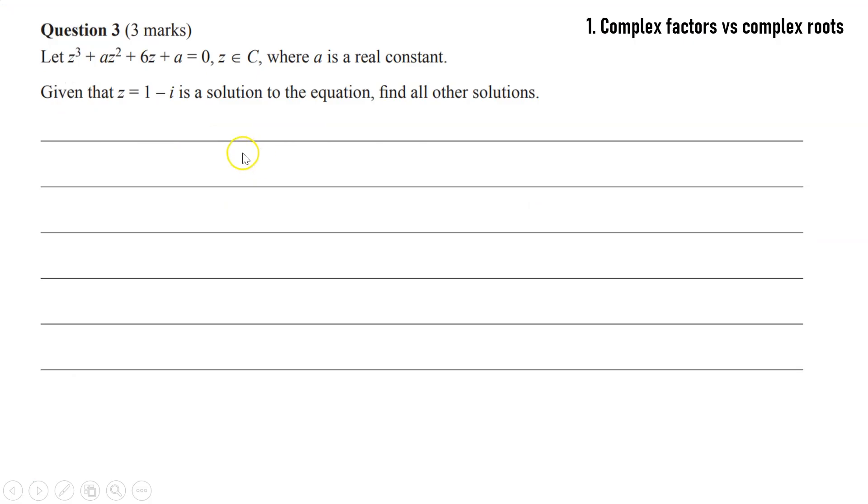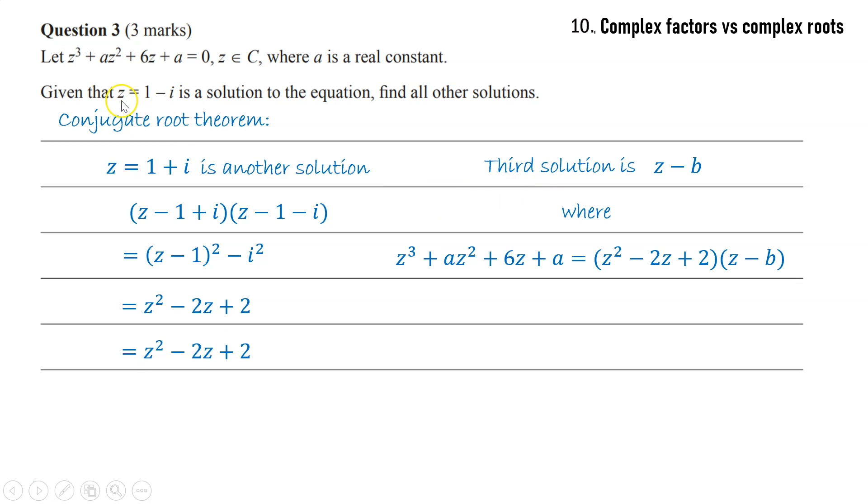So in this complex numbers problem, it's a cubic polynomial. We're given one solution and we want to find all others. We can use the conjugate root theorem. So z equals 1 plus i is going to be a second solution, and then we multiply these two together to get this quadratic term. The original was a cubic, so the third solution must be linear.